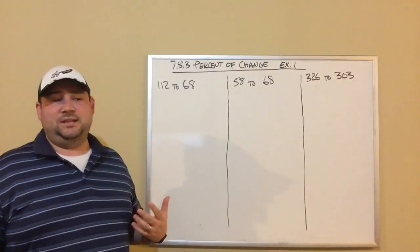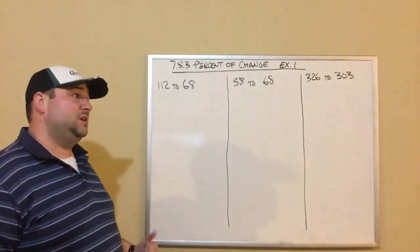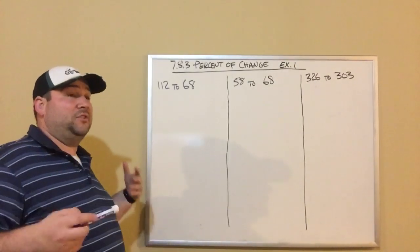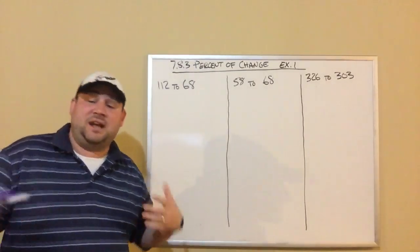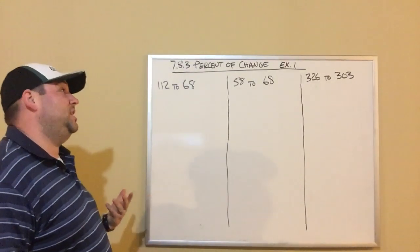Percent of change is when you can compare old values and new values via a percentage. It's a way, for example, you could calculate a discount percentage on something. A discount percentage is a form of a percent of change.